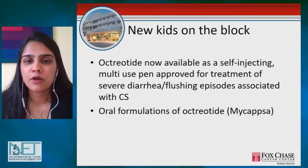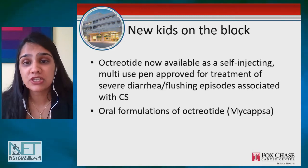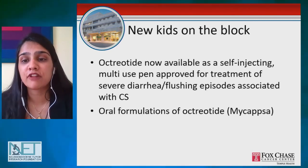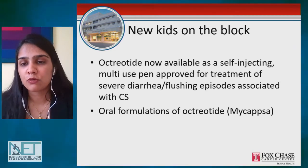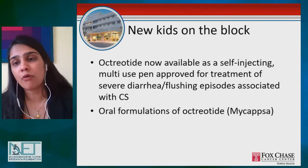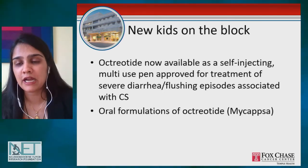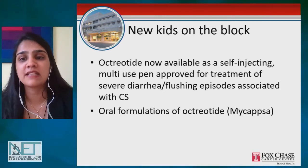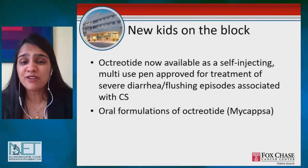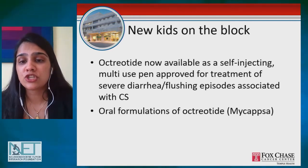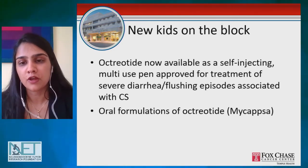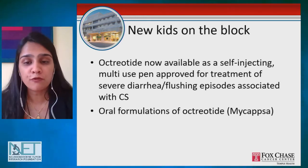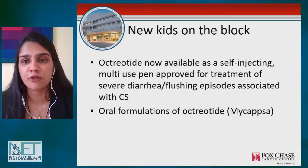Looking at newer developments, octreotide is now available as a self-injecting multi-use pen, which can be used for severe diarrhea, flushing episodes, and breakthrough symptoms associated with carcinoid syndrome. You don't have to pull out a needle and draw medicine from a syringe — it's like a self-injecting pen, similar to insulin pens, making it easier. There is also an oral formulation of octreotide being approved for acromegaly, another growth disorder. It's not yet approved for carcinoid syndrome, but something to look forward to in future.